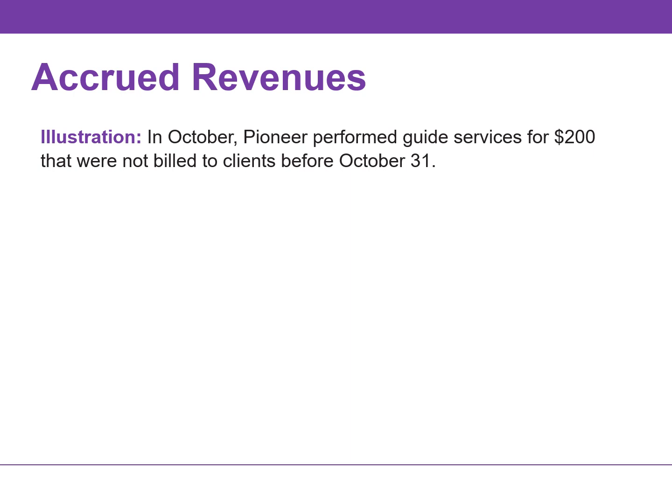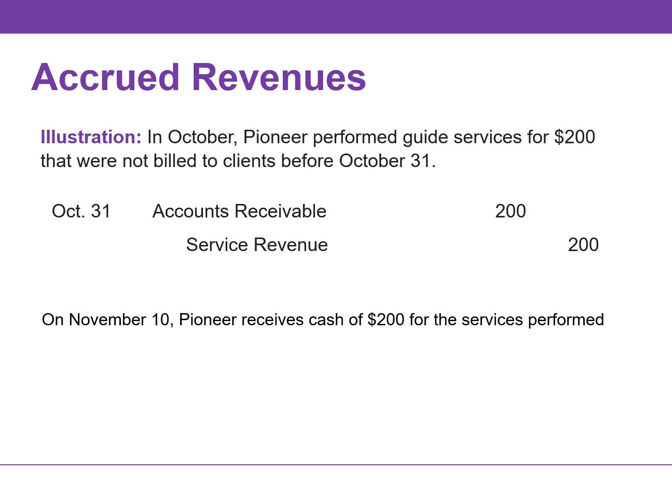For example, in October, Pioneer performed services for $200 that were not billed to clients on or before October 31st. Because these services are not billed, they are not recorded. The accrual of unrecorded service revenue increases or debits accounts receivable and increases or credits service revenue. On November 10th, Pioneer receives cash of $200 for the services performed in October. This will result in a debit to cash and a credit to accounts receivable.